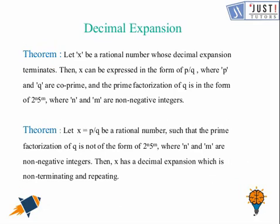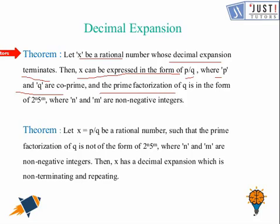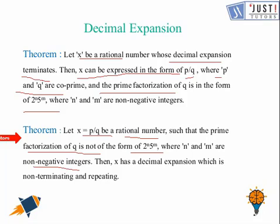Now let us look at this theorem. Let x be a rational number whose decimal expansion terminates. Then x can be expressed in the form p over q where p and q are co-prime, and the prime factorization of q is in the form 2 raised to the power n times 5 raised to the power m, where n and m are non-negative integers. Conversely, if the prime factorization of q is not of that form, then x has a decimal expansion which is non-terminating and repeating. So it all depends on this form — if you get it in the denominator, it is terminating; if not, it is non-terminating.